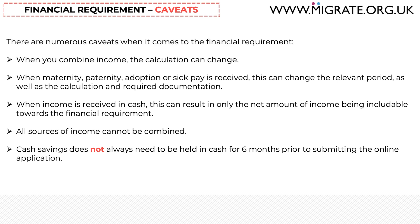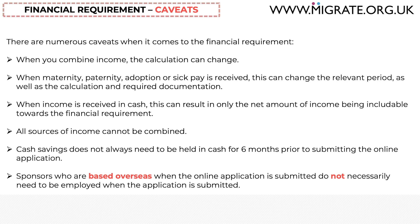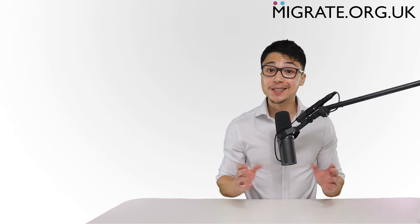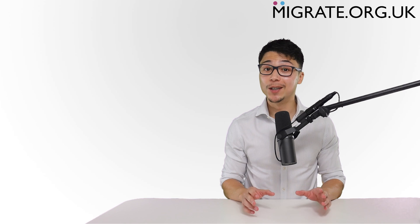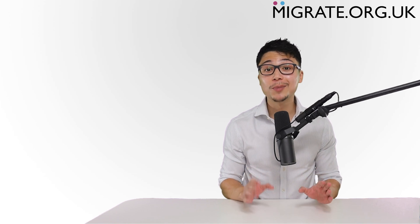Whilst employment income under category A and B ordinarily requires the person to be employed when the application is submitted, there is no such requirement for sponsors who are based overseas. There are loads of points such as this which we discuss on our website, migrate.org.uk, and we can elaborate more on these in future YouTube videos if we see that people find these videos helpful. The financial requirement is one of the many mandatory requirements that you must meet when you apply for a UK fiancé visa.